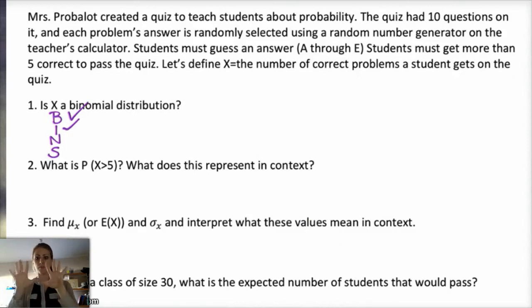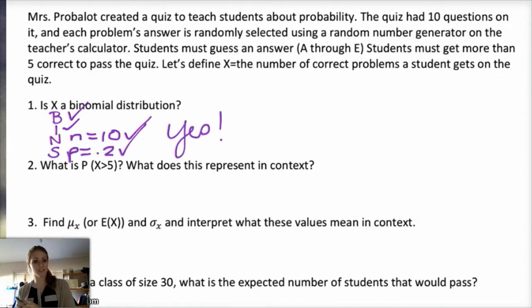There's a set number of problems. There's ten problems, which means our number of trials, n, is ten. Yes. And then S is probability of success has to be the same for each trial. And it is probability of success is one out of five, 0.2, because there's five problems on each question. So it is, in fact, a binomial distribution. Yay!